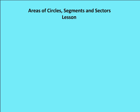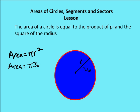Hello and welcome to AutonMath. In this edition, we're going to talk about the areas of circles, segments, and sectors. This should be a review for you. The area of a circle is the blue area within the red circle, defined as the product of pi and the square of the radius, or pi r squared. In this case, we have a radius of six units, so the area of this circle is 36 pi.